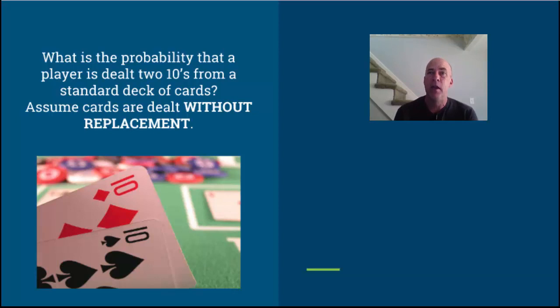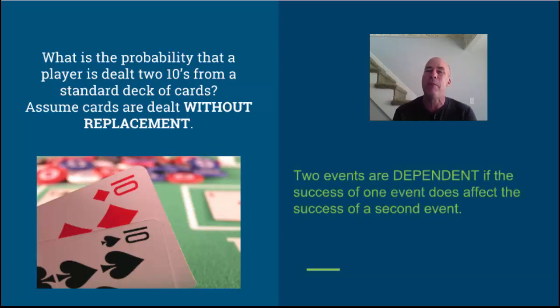So what's different about this example? In the last example, the coin and die have no influence over each other. But here, the fact that I deal a card does influence what happens on the next card because there'll be fewer cards in the deck. In that situation we call these dependent events. Two events are dependent if the success of one event does affect the success of a second event.